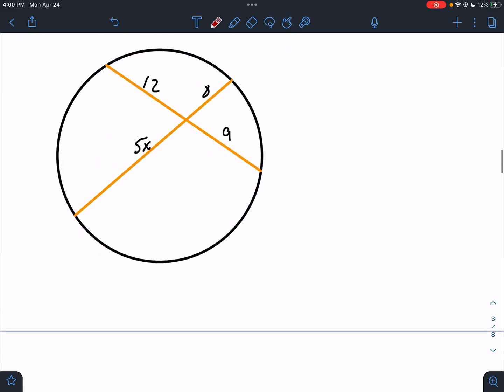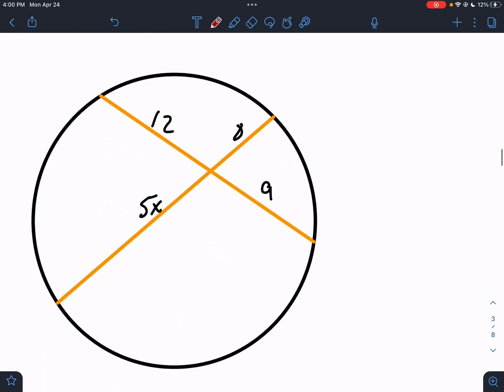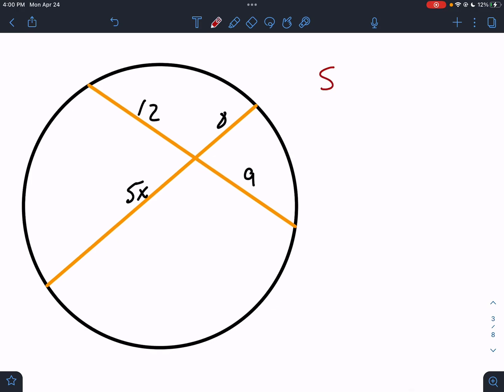Let's see what it looks like on an actual problem. So here we have two chords. So we know that 5x times 8 has to equal 12 times 9.